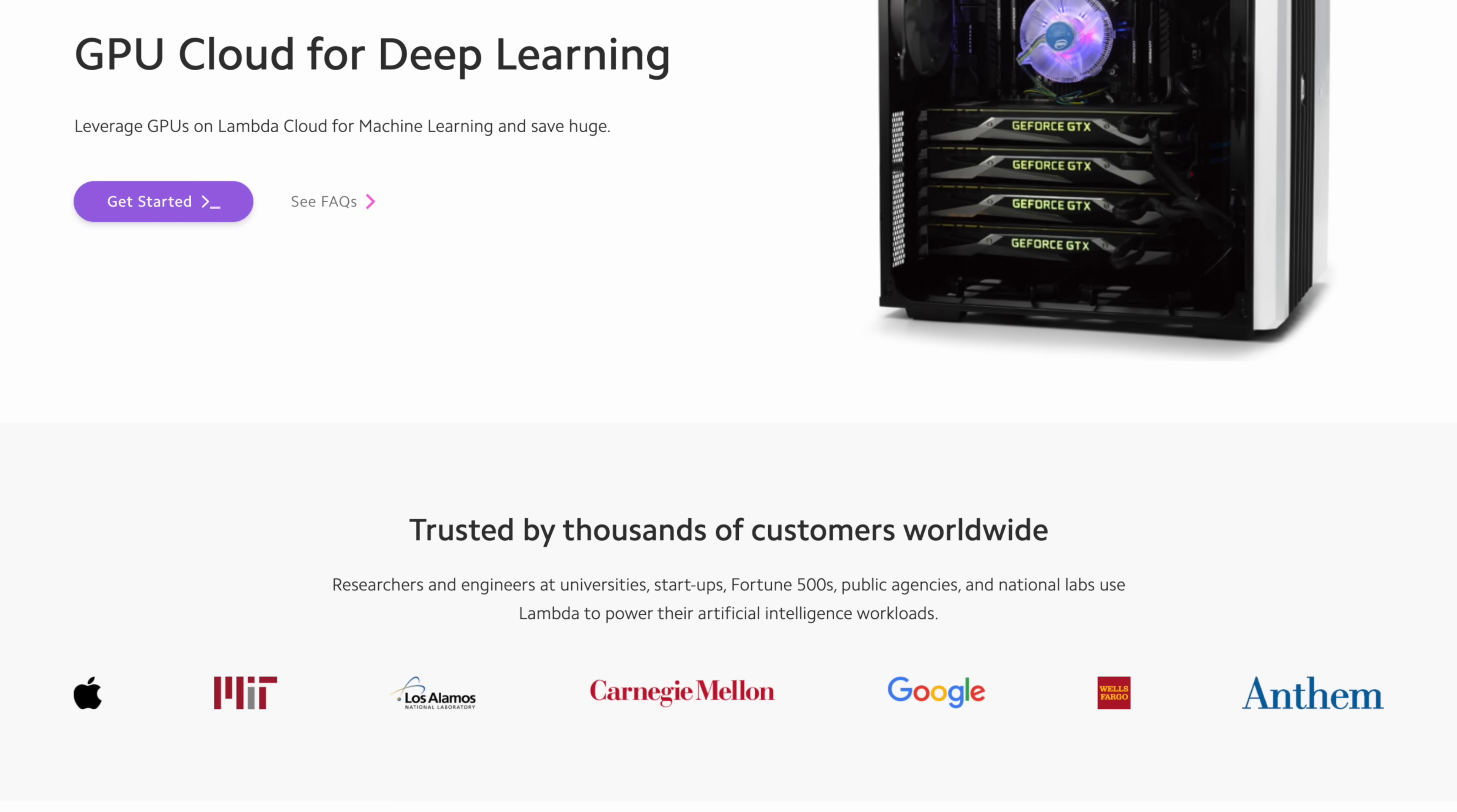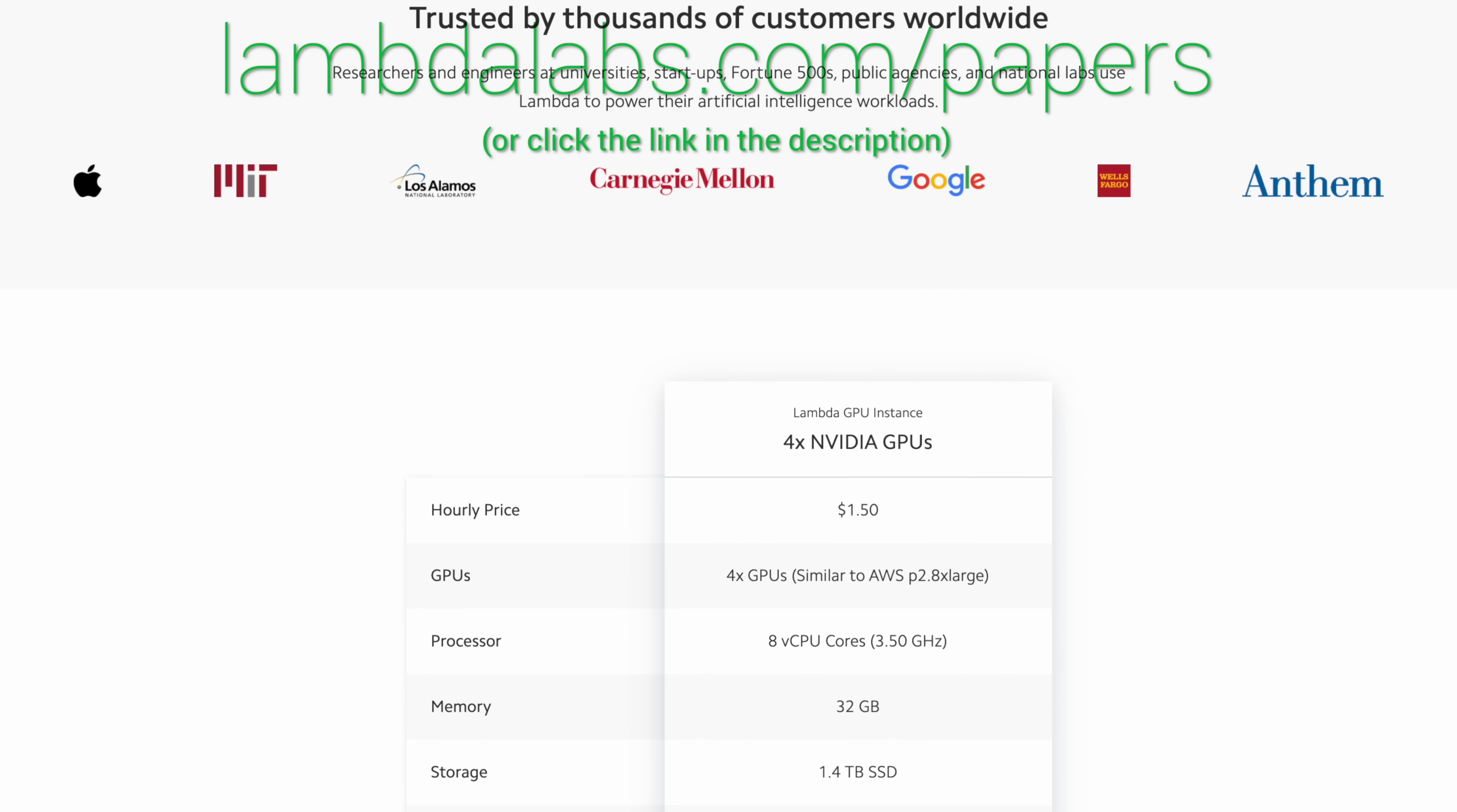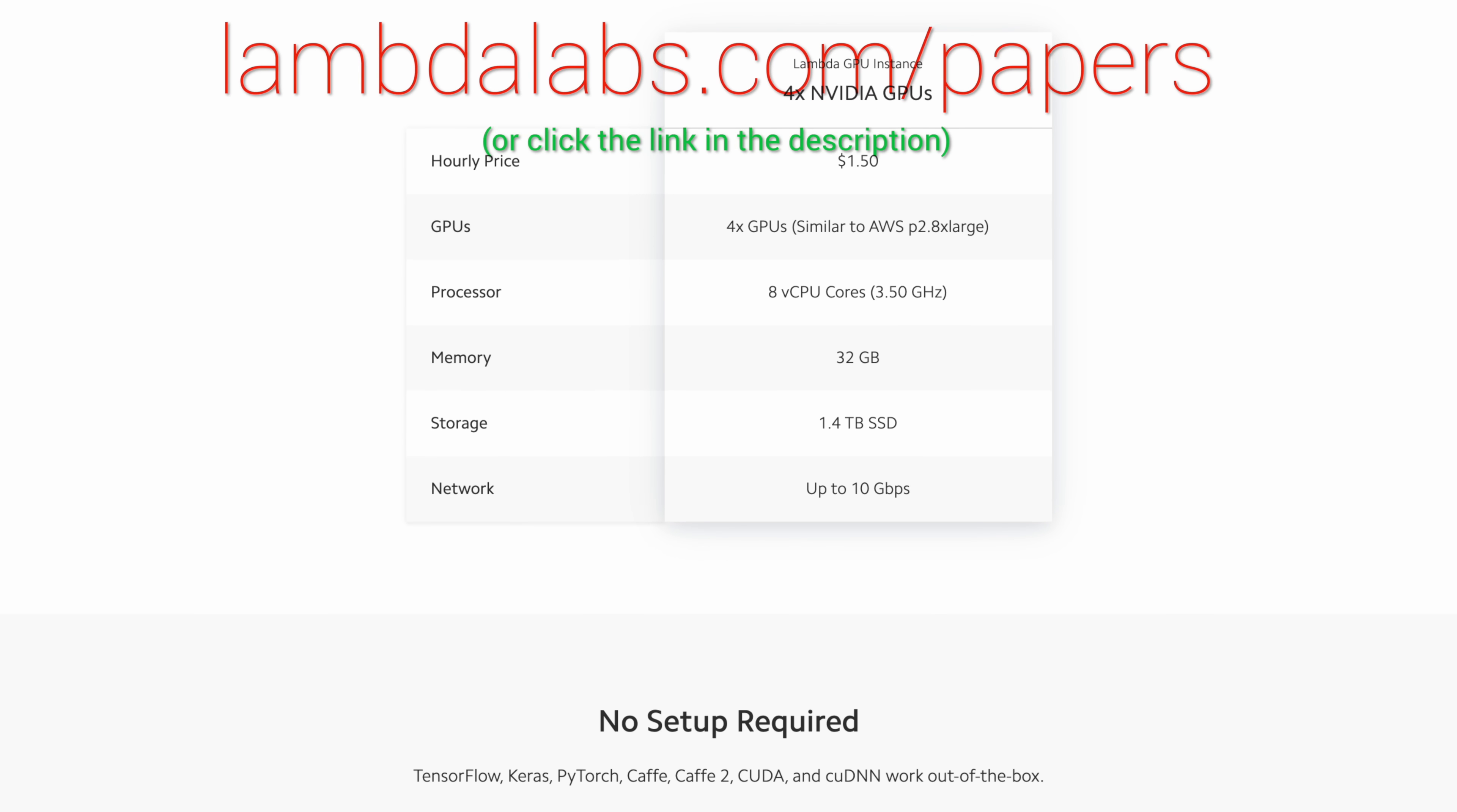The Lambda GPU Cloud can train ImageNet to 93% accuracy for less than $19. Lambda's web-based IDE lets you easily access your instance right in your browser. And finally, hold on to your papers because the Lambda GPU Cloud costs less than half of AWS and Azure. Make sure to go to lambdalabs.com/papers and sign up for one of their amazing GPU instances today.